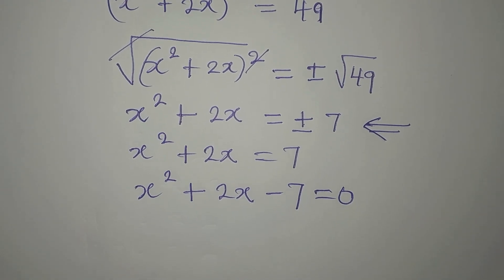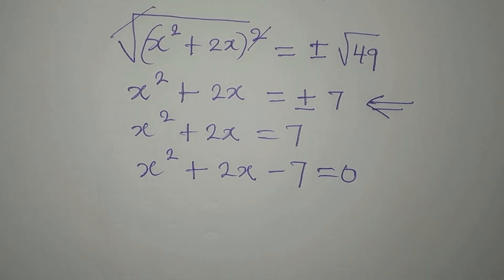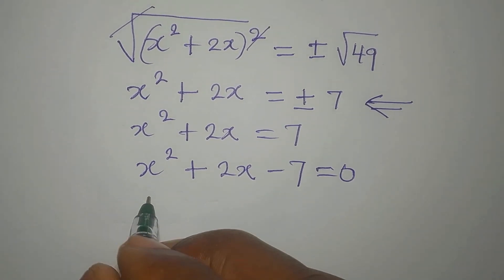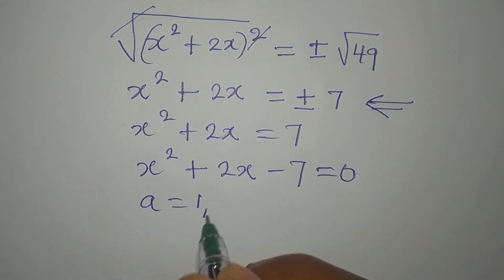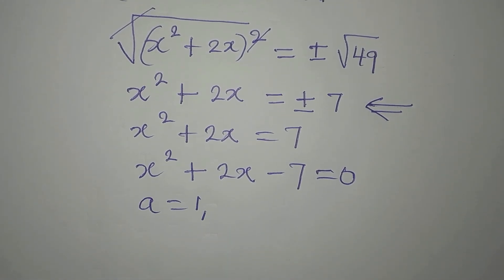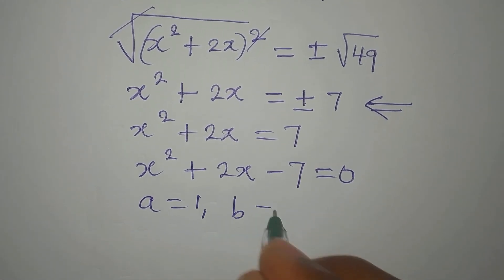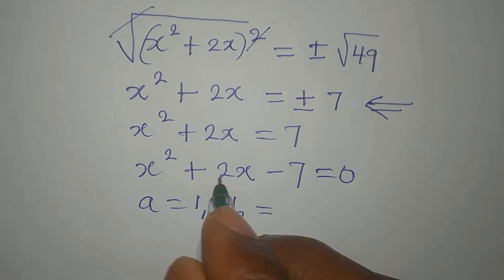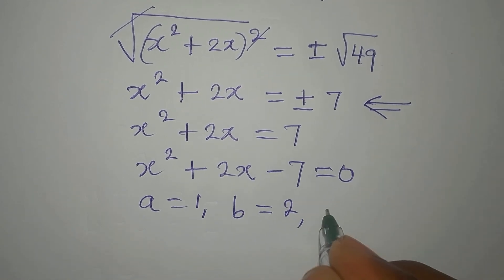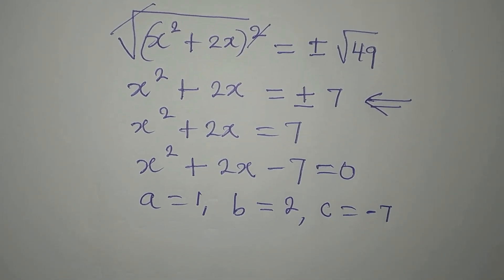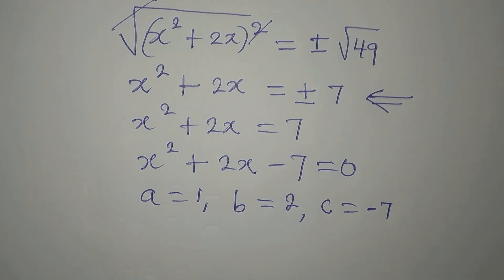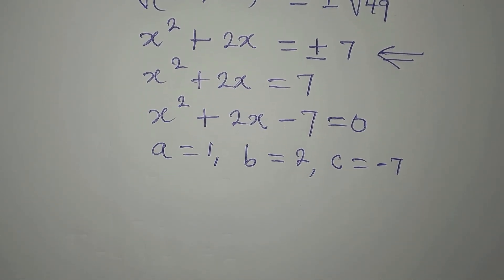Our a is 1 — remember we have a, b, and c in the formula. Our b is 2 and c is minus 7. Now, can you remember the formula?